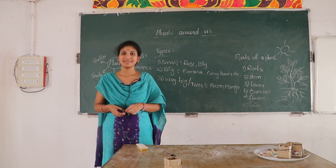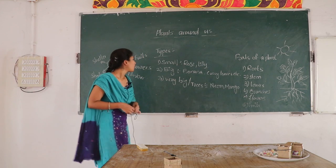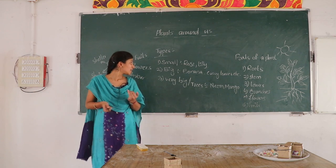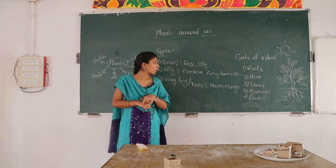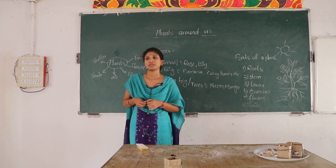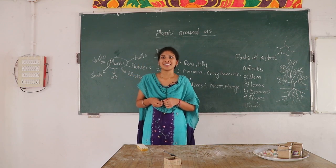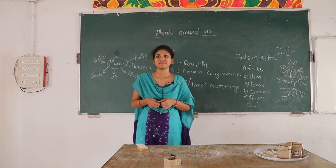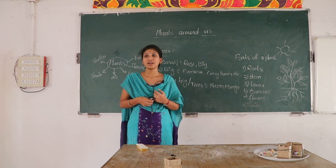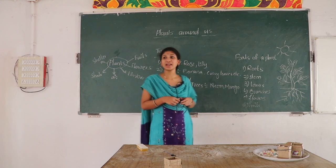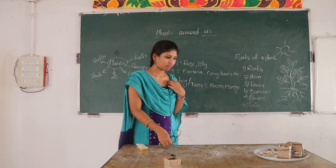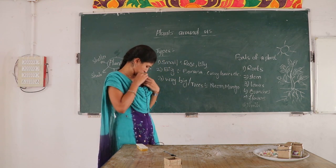May I ask some questions? Yes. How many types are there in plants? Three types — small, big, very big. How are roots helpful to the plant? Roots absorb water and nutrition from the soil and transport them to all parts of the plant. Thank you very much.